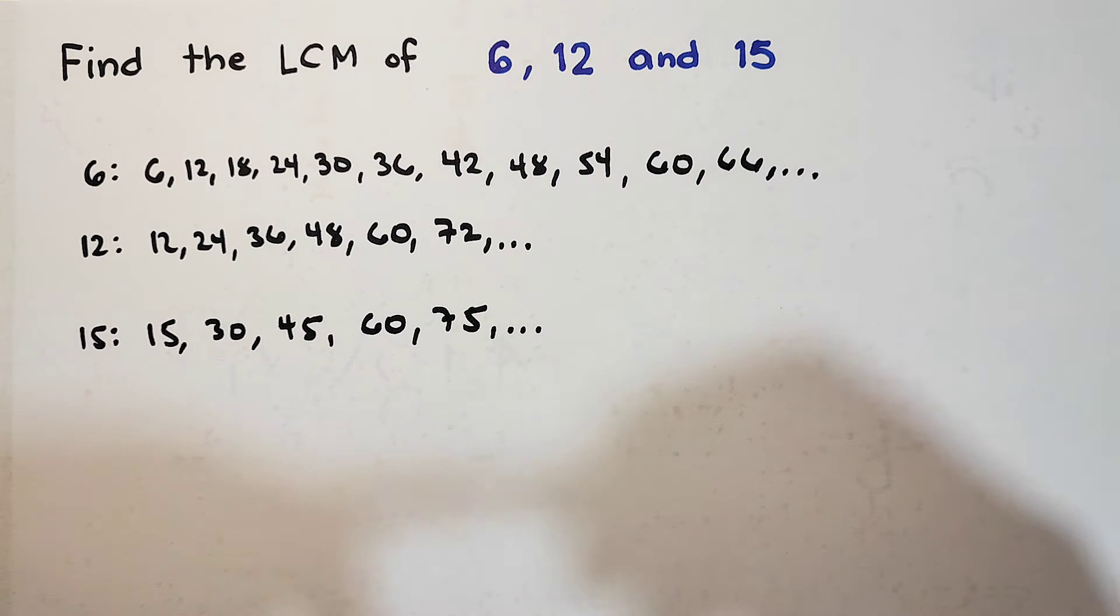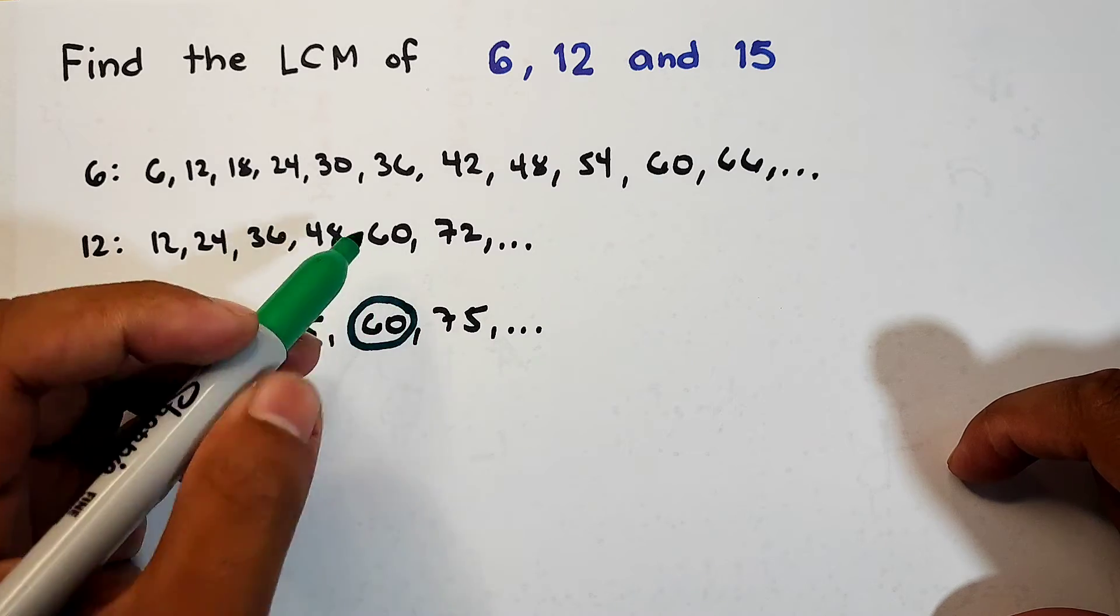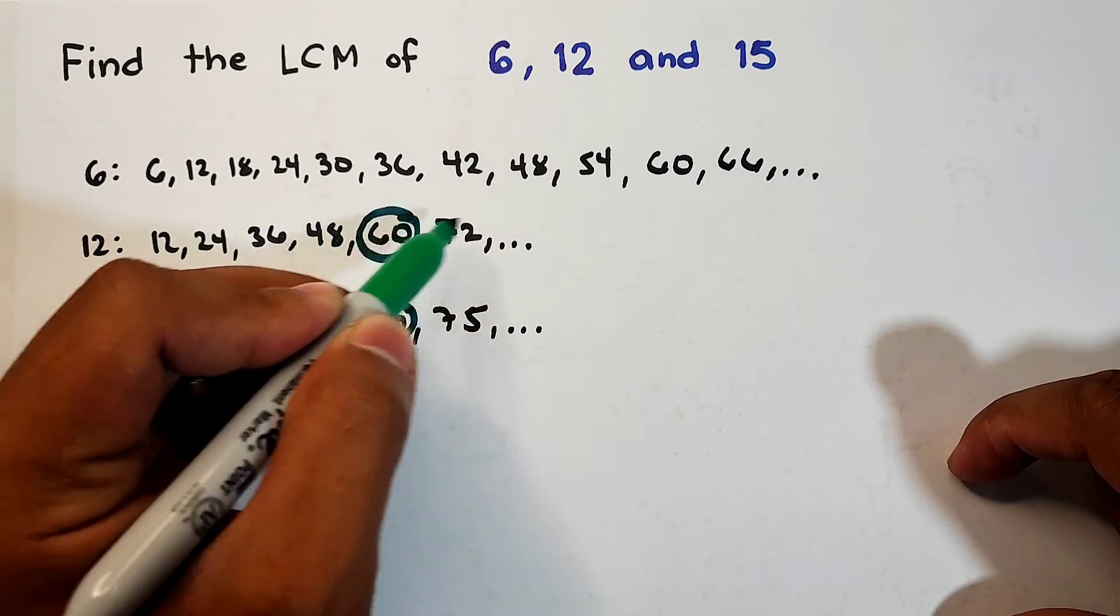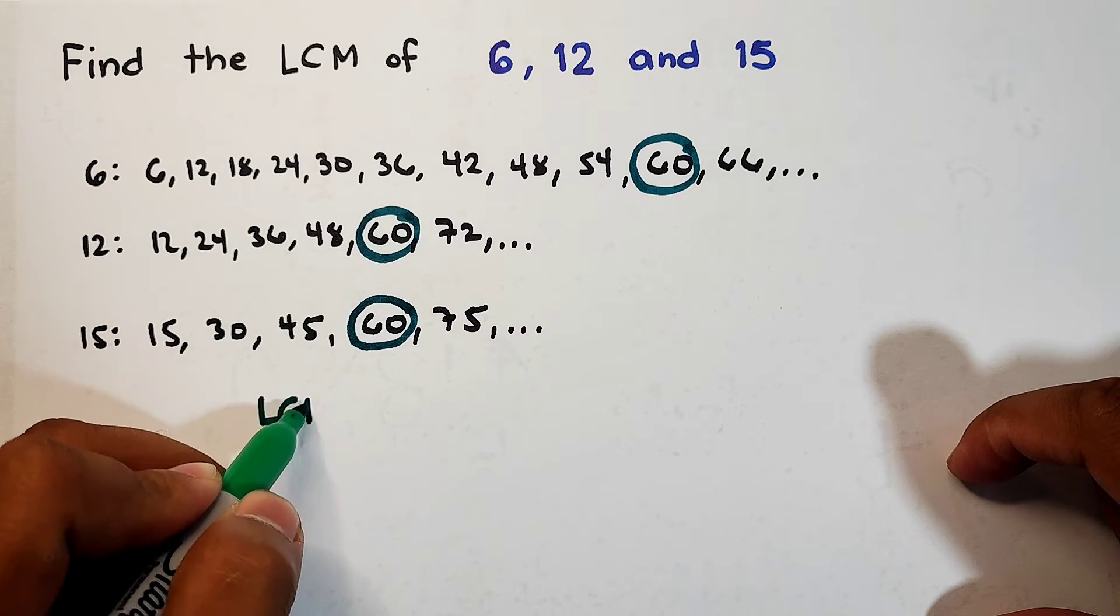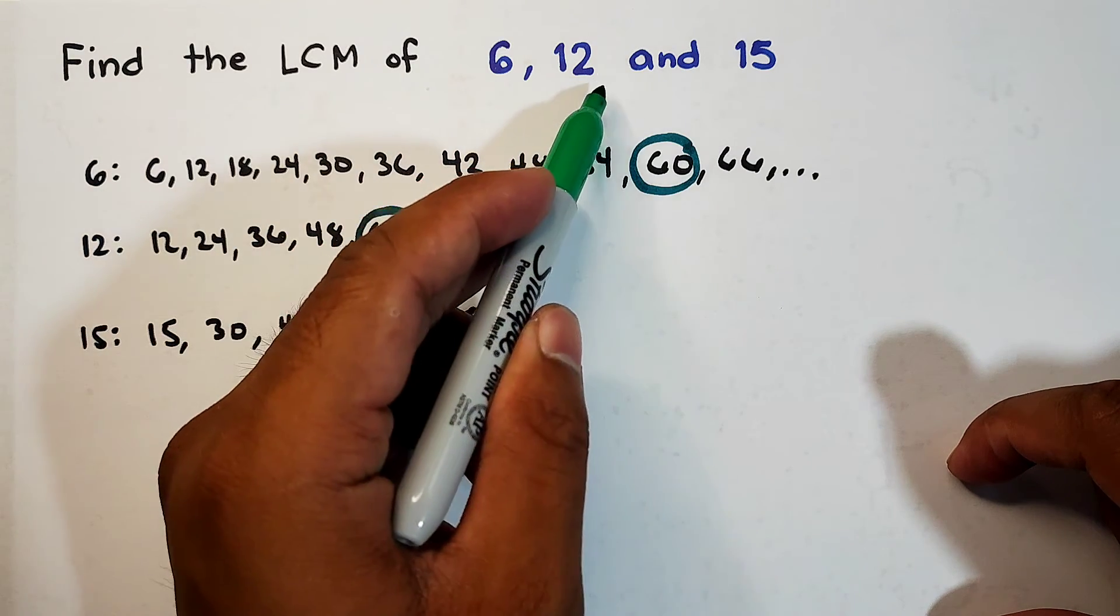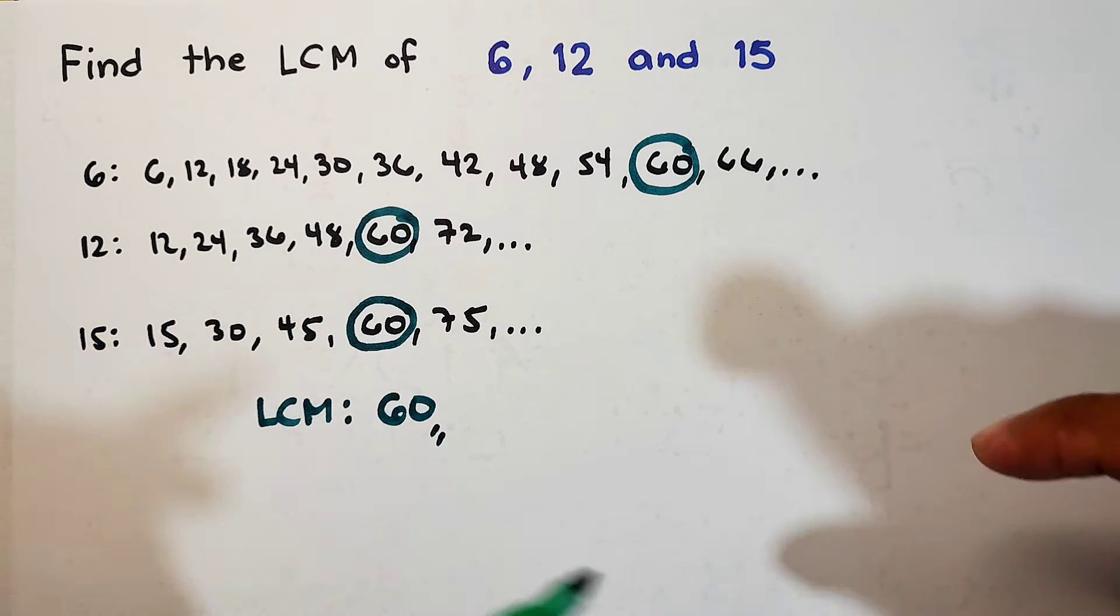And as you can see guys, we have common multiples. We have many common multiples, pero ang pinakauna nilang common, or yung pinakamababa nilang common, or yung least common multiple nila, is definitely 60. Meaning, the LCM of 6, 12, and 15 is equal to 60. This is the answer guys.